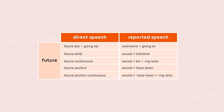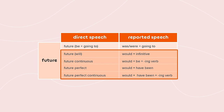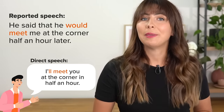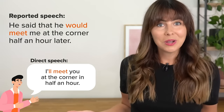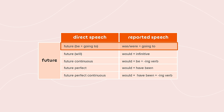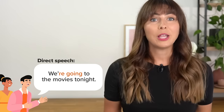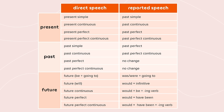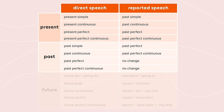First of all, the future tenses are simple. All future tenses in English are formed with the auxiliary verb "will," and in reported speech all we need to do is shift "will" to "would." For example: "I'll meet you at the corner in half an hour" becomes "He said that he would meet me at the corner half an hour later." We can also form future sentences with "be going to" — in that case we shift am/is/are back to was/were. "We're going to the movies tonight" becomes "They said that they were going to the movies that night." We've already crossed five tenses off that list!